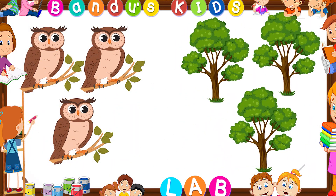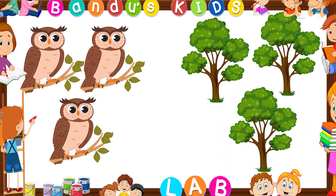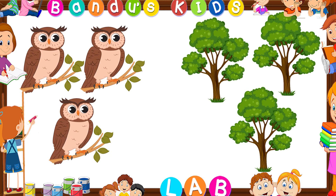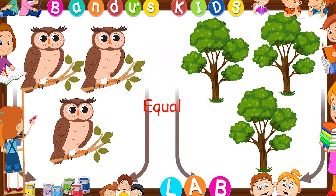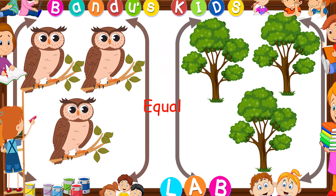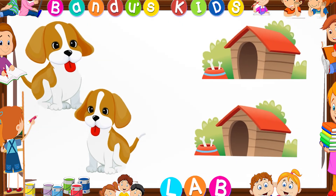Look at this picture. Let's count first. Here are three owls and here are three trees. In this picture, the set of owls and the set of trees are equal in number, so they are equal.